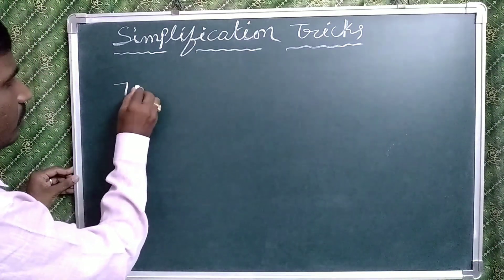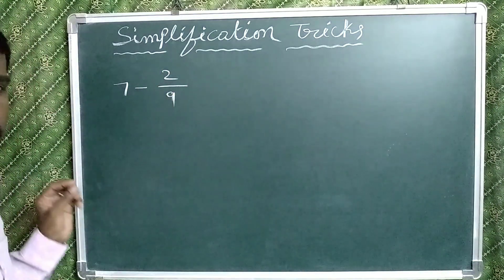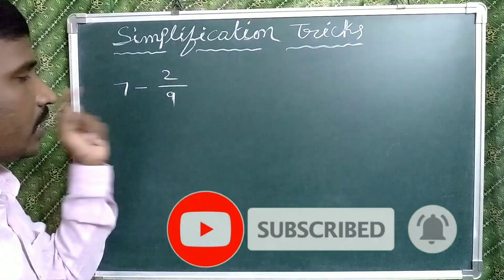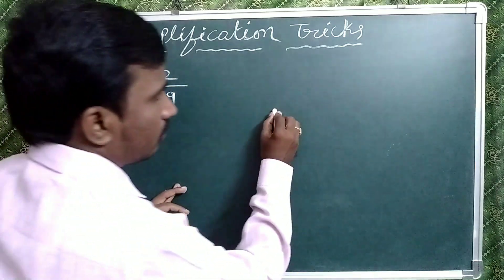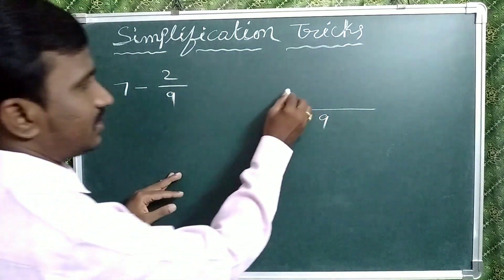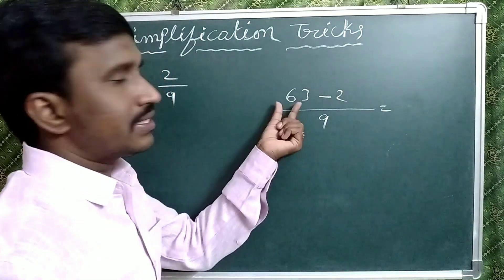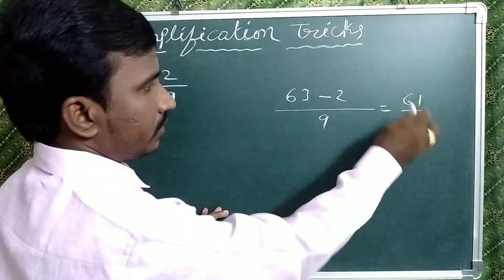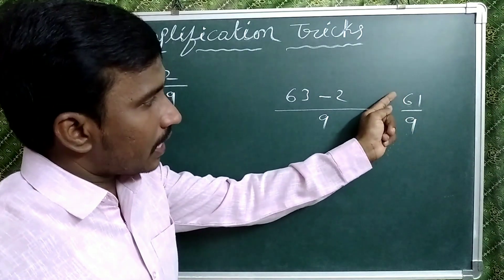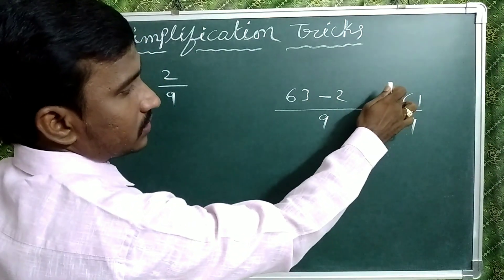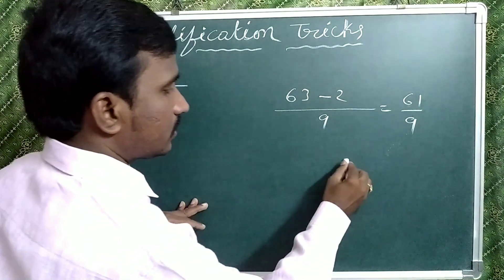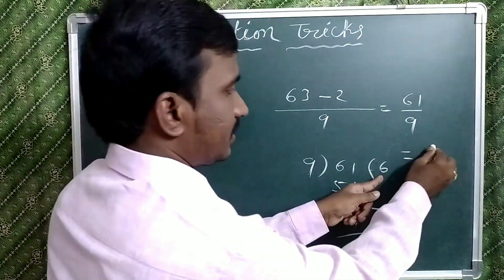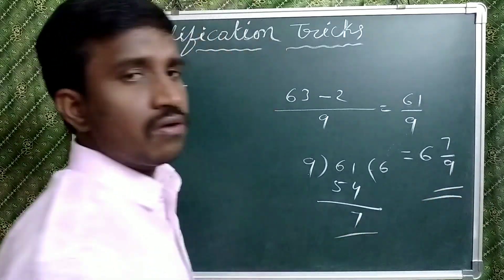Now suppose we are given 7 minus 2 by 9 — same model, a whole number and a proper fraction, but with minus. By the general method, take LCM 9: 9 times 7 is 63, minus 2 gives 63 minus 2 equals 61, so 61 by 9. But this is an improper fraction since the numerator is greater than the denominator. So convert it to a mixed fraction: 61 divided by 9, which can be written as 6 and 7 by 9.